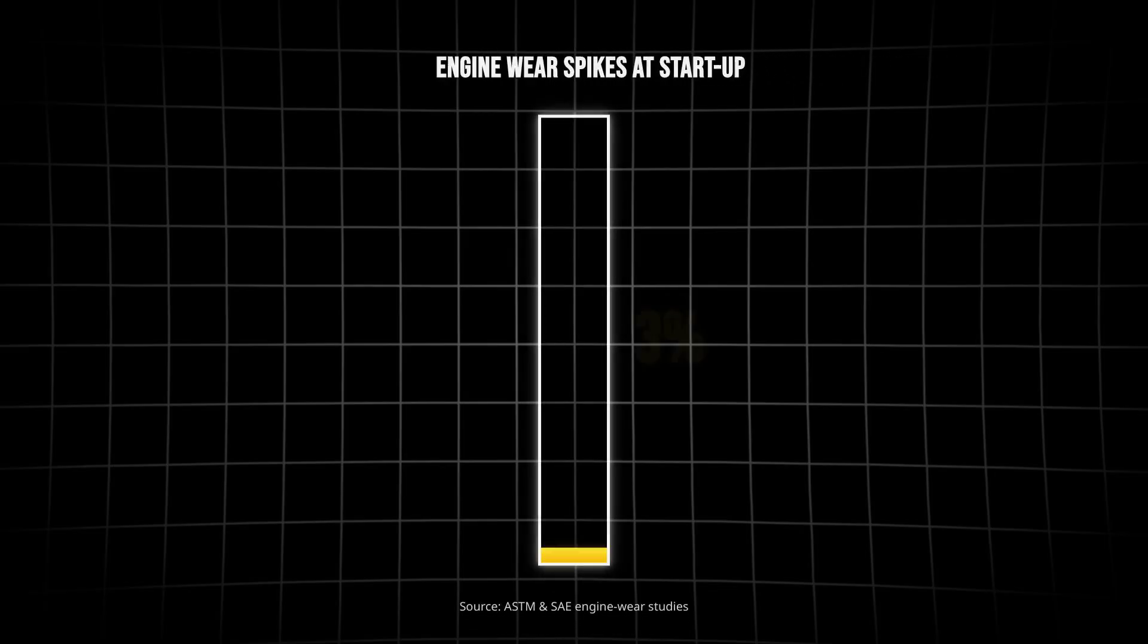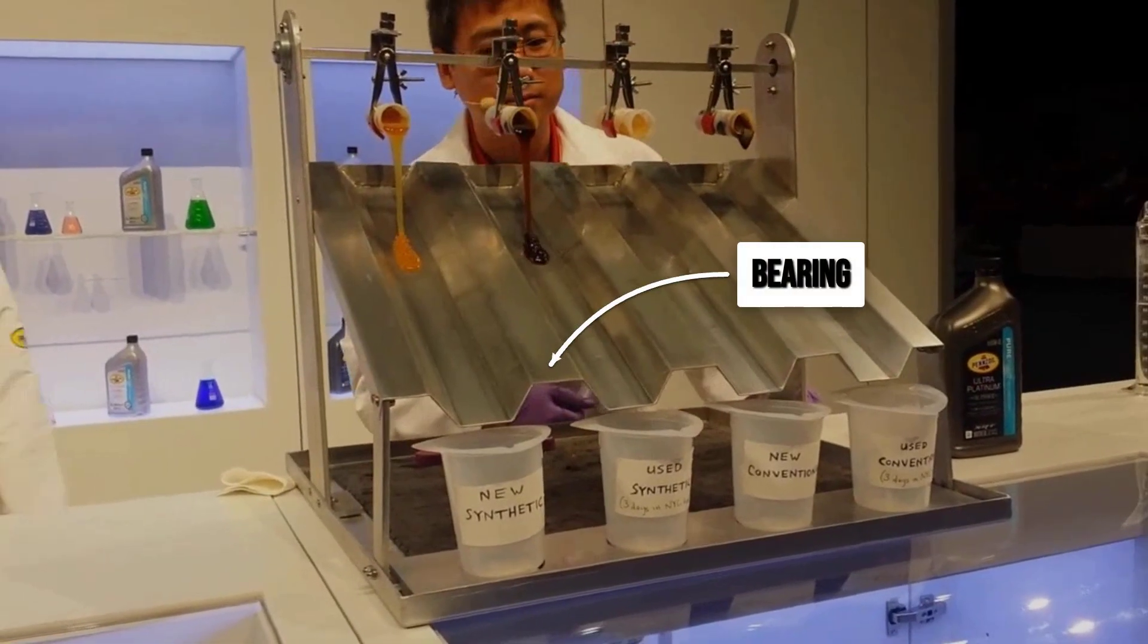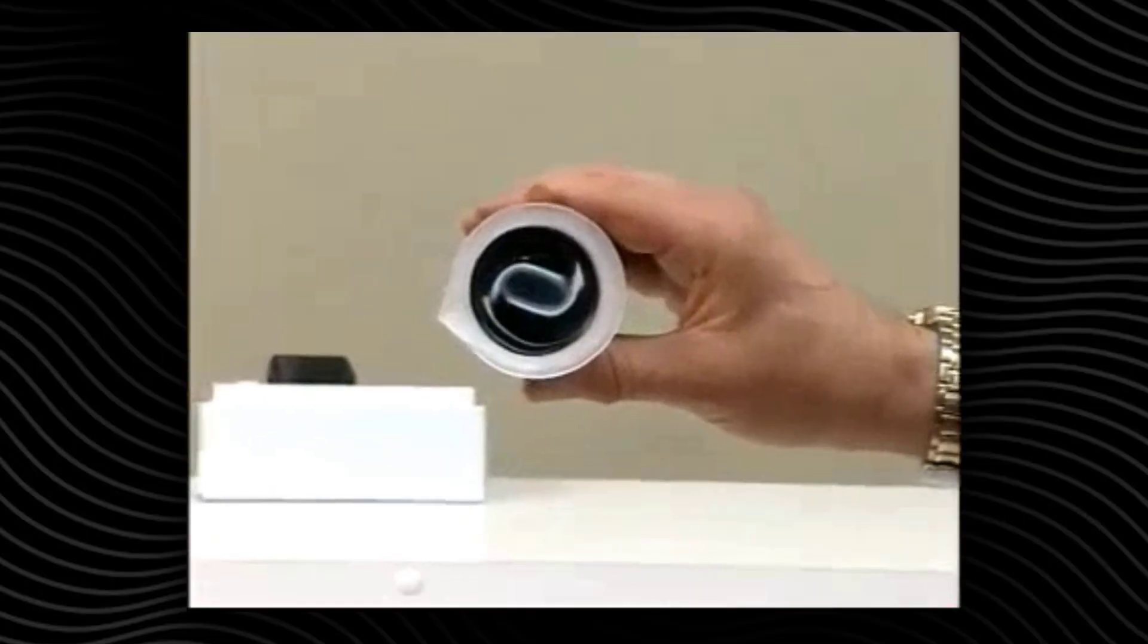This matters because three out of every four instances of engine wear happen in the first minute after a cold start, when oil is slow to reach critical parts. If your oil thickens or gels even slightly, metal surfaces run dry just long enough to leave permanent scars.